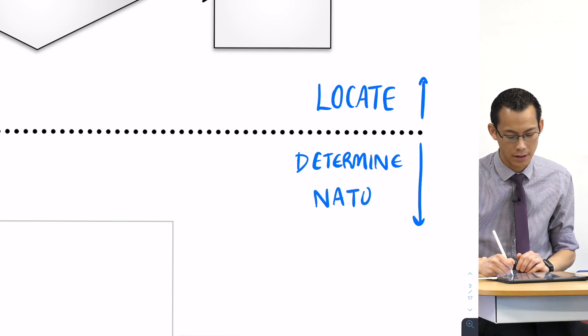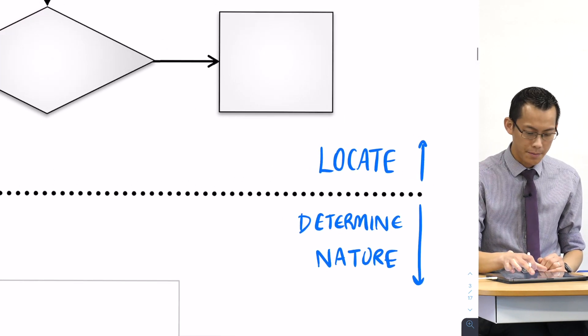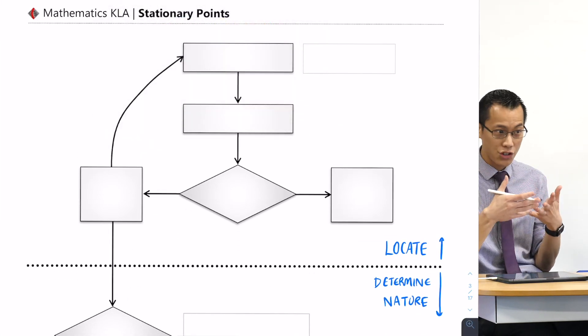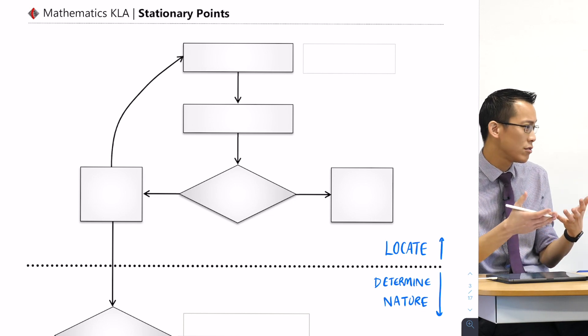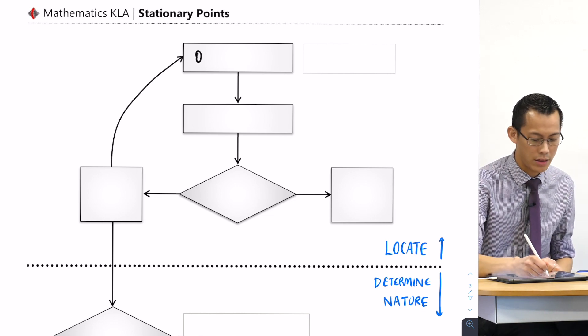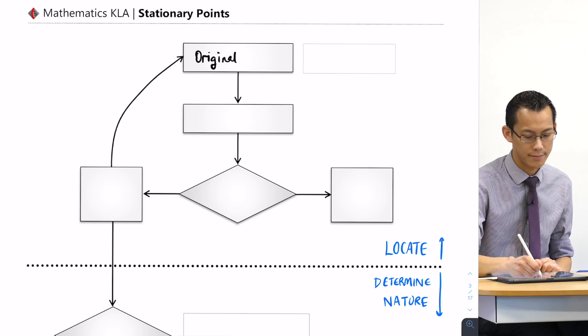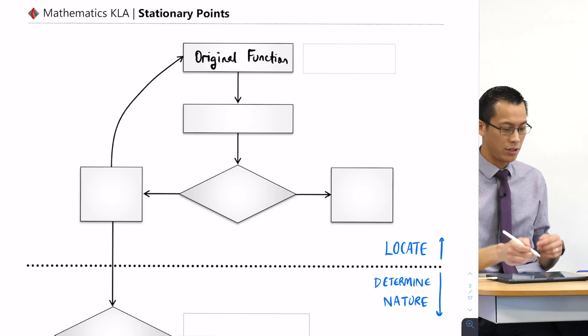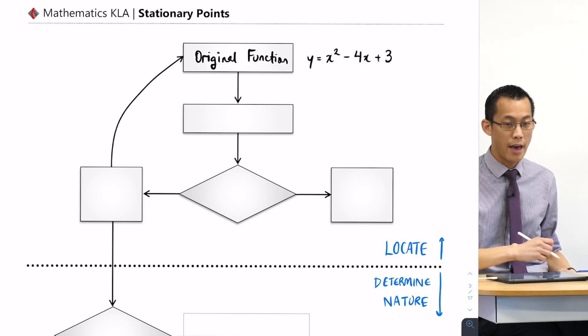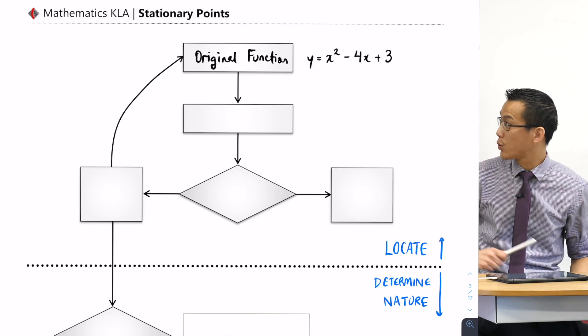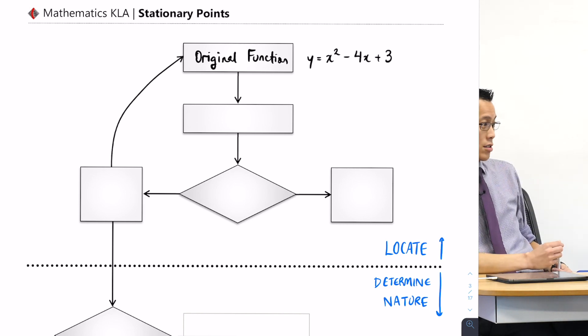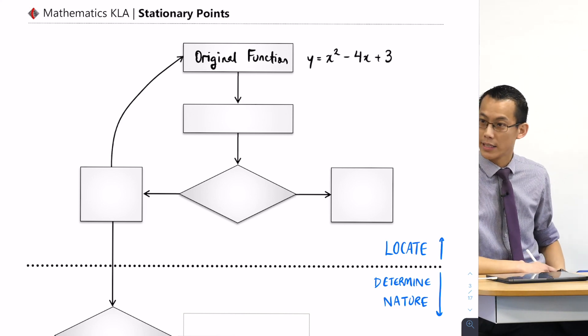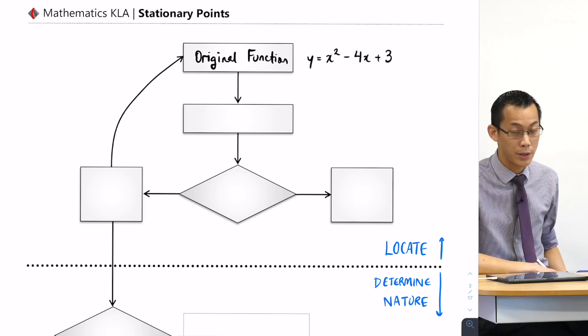Let's have a look at where we begin right at the top. We start with the original function. Now as we go through this, what I'm actually gonna do is work through an example with you. Here's an example I'd like us to work with: y equals x squared minus 4x plus 3. It's a very simple looking graph with just a few features that are relevant to us.